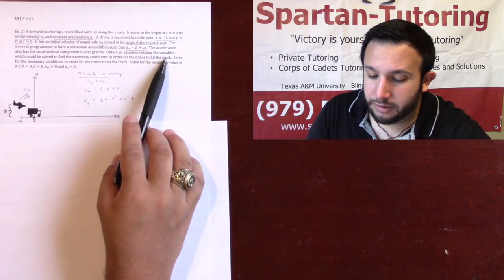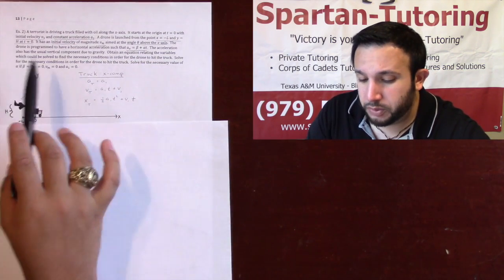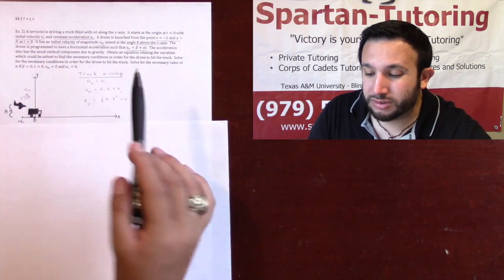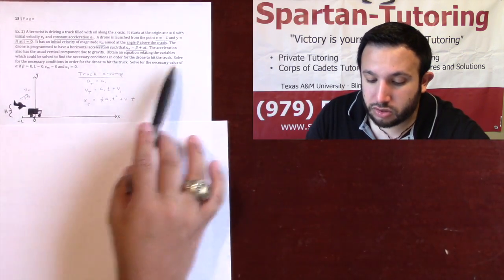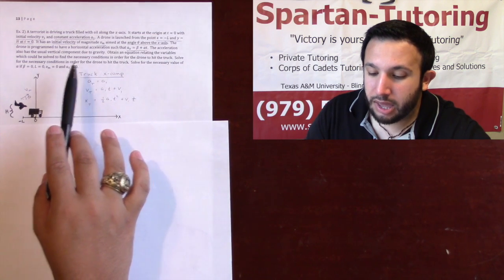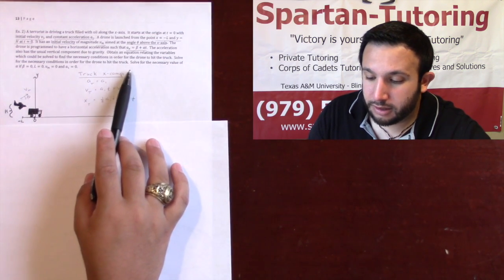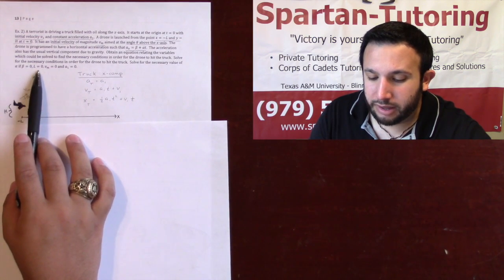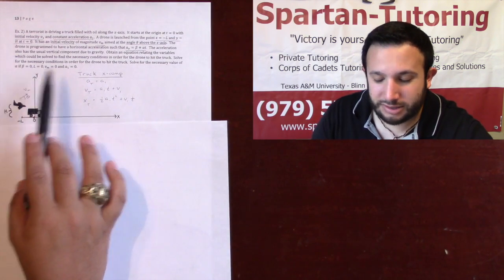It says obtain an equation relating the variables which could be solved to find the necessary conditions in order for the drone to hit the truck. Solve for the necessary conditions in order for the drone to hit the truck. And solve for the necessary value of alpha if beta is zero, l is zero, vm is zero, and a1 is zero.